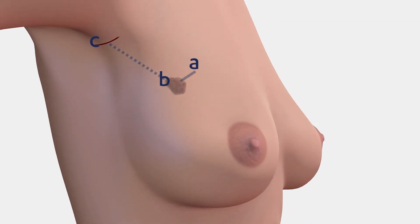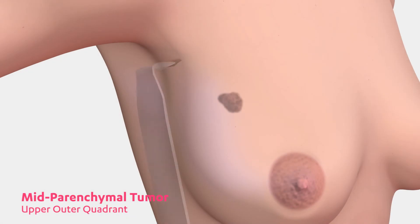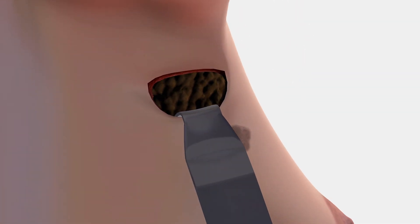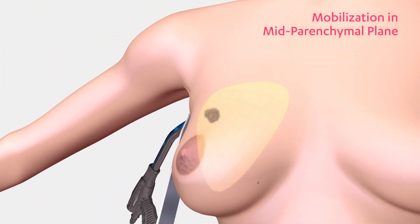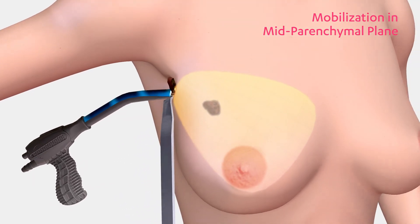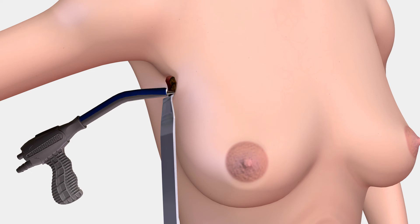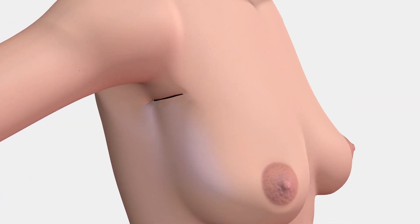For a mid-depth lesion in the upper outer quadrant of the breast, an axillary incision may be used. During dissection towards the tumor, in this case in the mid-parenchymal plane, extend the plane of dissection cephalad and caudad. This mobilization of surrounding tissue will facilitate re-approximation of the tissue. Excise the tumor and close the cavity. Since a natural skin crease incision is utilized, the resulting scar is most often not or barely visible.